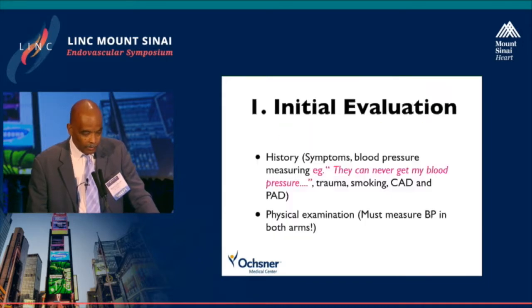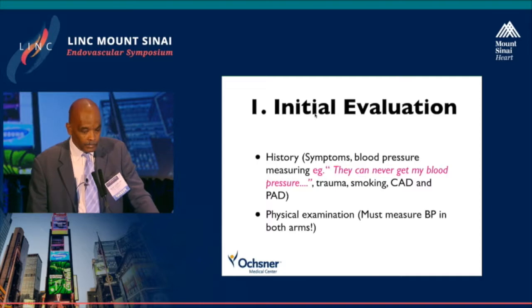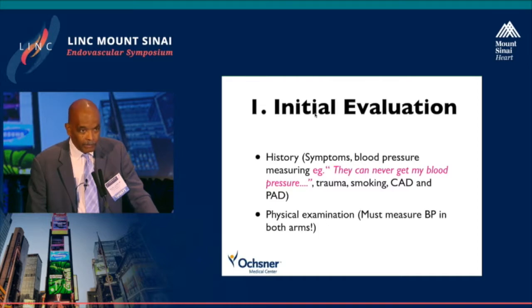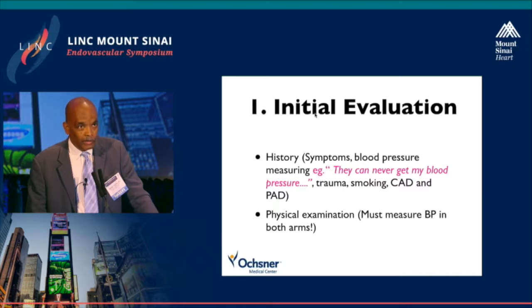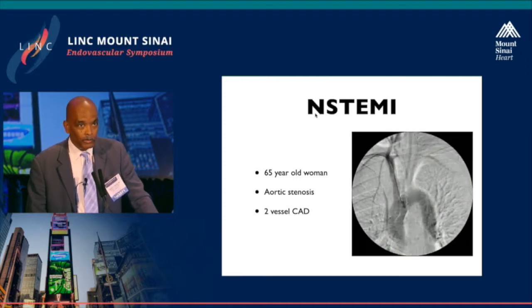My algorithm begins with an initial evaluation — history and symptoms. Often patients will tell you they can never get a blood pressure in their left arm, so you should try it and see if the patient is telling the truth. There may be a history of trauma. If the patient is a cigarette smoker or has coronary artery disease or PAD, that increases the likelihood of subclavian stenosis. On physical examination, you must have blood pressures recorded in both arms — even for a routine clinic visit.